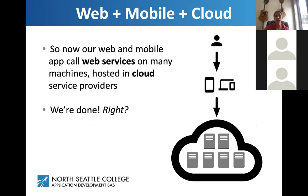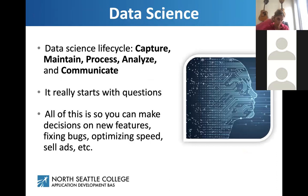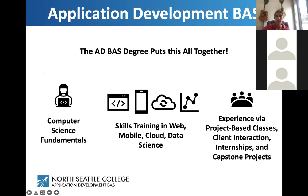There's one more thing: we need to know what people are doing with the app — what they tap or click on, what ad to show, what is broken. That's where data science comes into play. The data science lifecycle captures, maintains, processes, analyzes, and communicates this information — all starting with questions — so you can make decisions on new features, fixing bugs, optimizing speed, and selling ads. The Application Development Bachelor's of Applied Science degree puts all of this together.